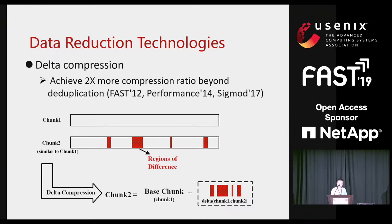Generally, data compression encodes two very similar chunks by using string-level compression techniques such as Xdelta and Zdelta, and only stores the delta chunk in the storage system. The chunk can be recovered by decoding the delta chunk and the base chunk accordingly.